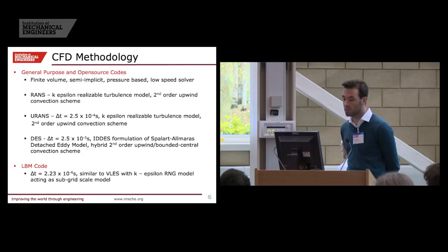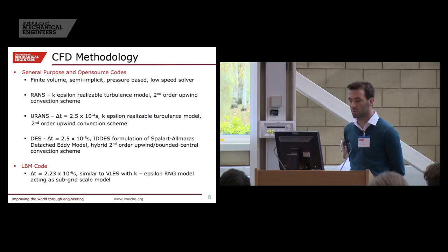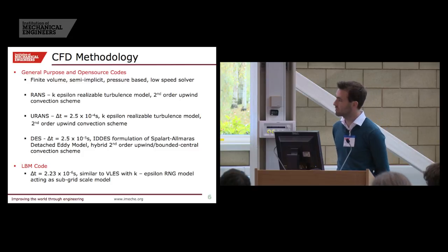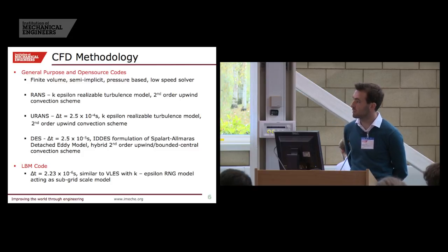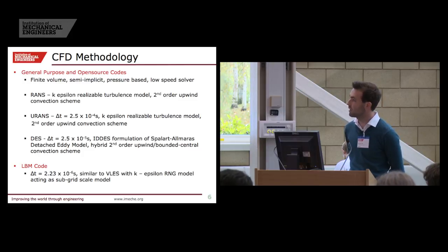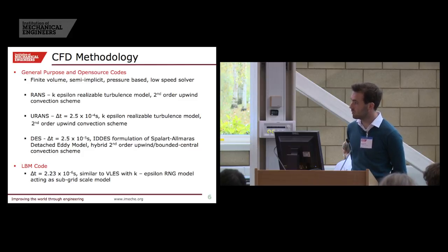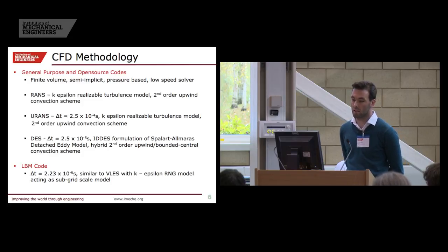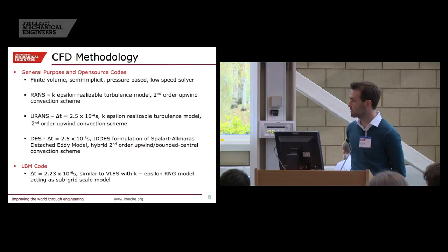The general purpose and open source codes both use finite volume semi-implicit pressure-based low-speed solvers. For the RANS case, the K-Epsilon realizable turbulence model with second-order upwind convection scheme was used. The same turbulence model and convection schemes were used in the U-RANS, but with a time step of 2.5×10⁻⁴ seconds. The DES has an order of magnitude smaller time step, and similarly for the Lattice Boltzmann code, due to the scales of turbulence being resolved. The Lattice Boltzmann is similar to a very large Eddy simulation, with a K-Epsilon RNG model acting as a subgrid scale model.